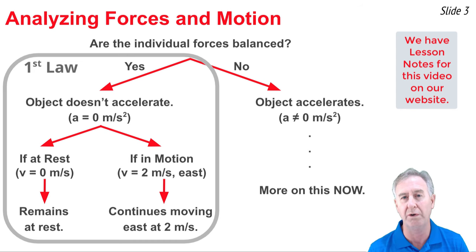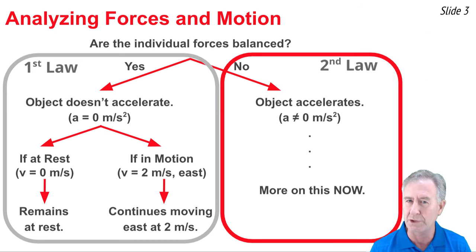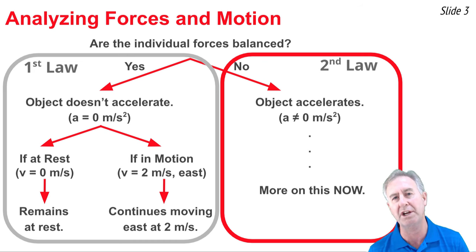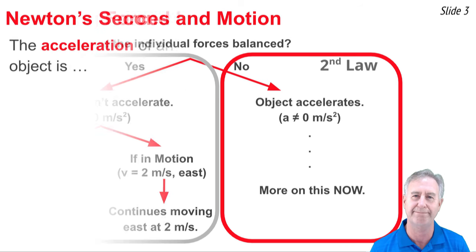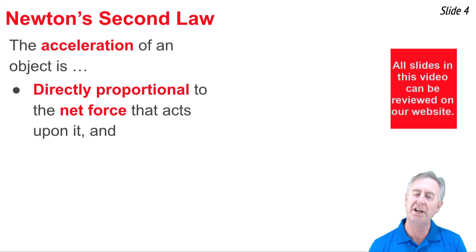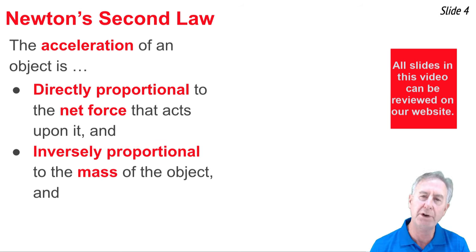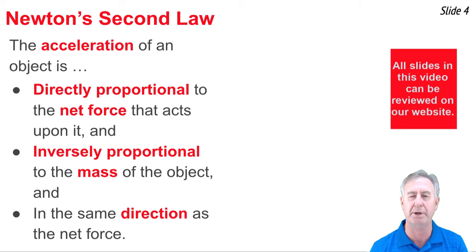If the answer to our question is no — the individual forces are not balanced — then what we're talking about is Newton's Second Law: the object is going to accelerate. The exact nature of that acceleration, the direction, the magnitude, is predicted by Newton's Second Law. In words: the acceleration of an object acted upon by an unbalanced force is directly proportional to the amount of net force that acts upon it, and inversely proportional to the amount of mass the object possesses. This acceleration is in the same direction as the net force.